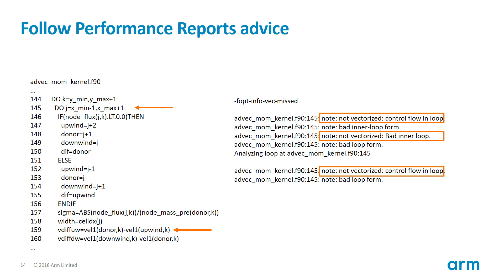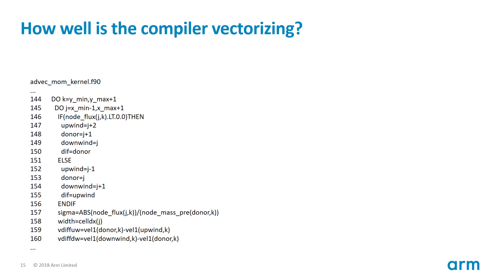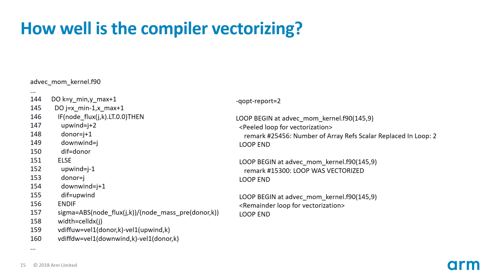Can a different compiler vectorize any better? Let's try again, but this time with the Intel compiler. The same section of code is shown on the left. To enable the compiler to generate a vectorization report, we now use the '-qopt-report' flag. On the right is a snippet of the report showing information about the loop at line 145. This is different from what we noticed with the GNU compiler — the Intel compiler has been able to generate vector instructions within that loop.